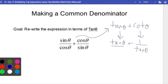So, how am I going to create a common denominator? Right now, I have 1 over here. I wish I had a tangent on the left side. Let's just include one. Tangent of theta. Tangent of theta.